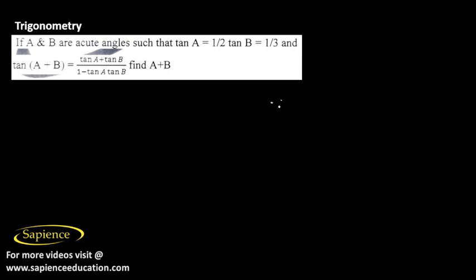Now since tan of 45 degrees is equal to 1, we can say that A plus B should be equal to 45 degrees. So we have found the value of A plus B. The answer is 45 degrees.